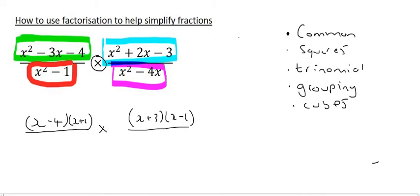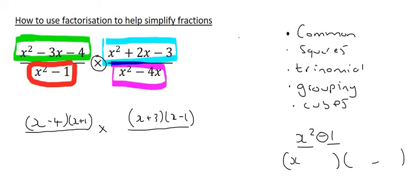Next, we'll do the part that's in red, which is x squared minus 1. Well, that is a difference of squares, because we have two terms separated with a minus, and each term is a perfect square. So we open up two brackets, and we know that x times x gives us x squared, and 1 times 1 gives us 1. And then the one bracket will have a plus, and the other bracket will have a minus.